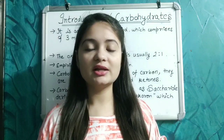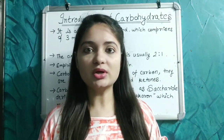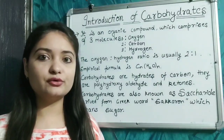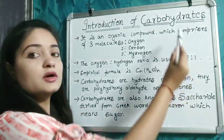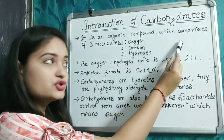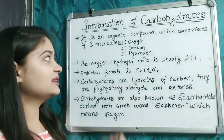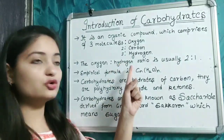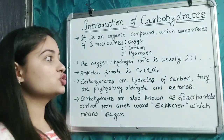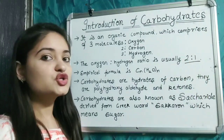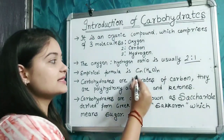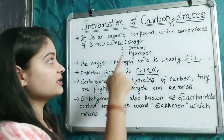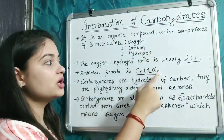Welcome back to my channel. Today in this video we will learn some basic concepts of carbohydrates. Carbohydrates are organic compounds which comprise of three molecules: oxygen, carbon, and hydrogen. The ratio of oxygen and hydrogen in carbohydrates is usually 2:1, so the empirical formula for carbohydrates is Cₙ(H₂O)ₙ, where C is carbon, H is hydrogen, and O is oxygen.